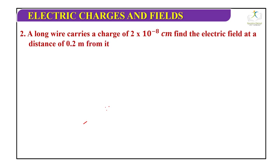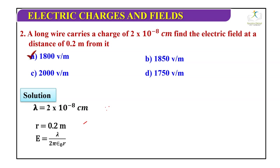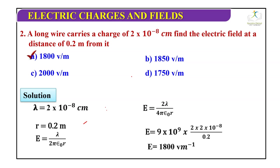Next question: A long wire carries a charge of 2 times 10 to the power minus 8 coulomb per centimeter. Find the electric field at a distance of 0.2 meter from it. Options: A: 1800 V/m, B: 1850 V/m, C: 2000 V/m, D: 1750 V/m. The correct answer is option A, 1800 V/m. Lambda is given as 2 times 10 to the power minus 8, r is 0.2 m. Using the formula E equals lambda by 2 pi epsilon naught r and substituting all values gives the result.